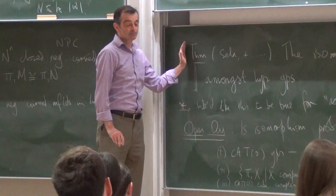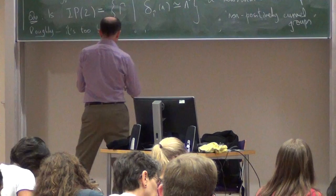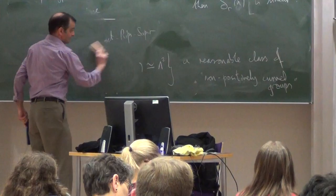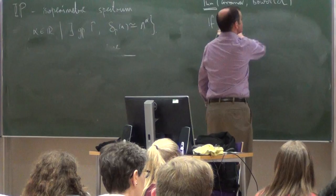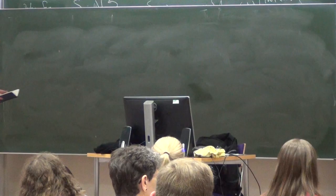Wonderful. Sela's theorem combined with Farrell-Jones says you can recognize which manifold is which amongst negatively curved manifolds in high dimensions. But Farrell-Jones later extended this to non-positive curvature. That theorem remains true in non-positive curvature. So if you could solve the isomorphism problem for fundamental groups of non-positive curvature manifolds, you'd be able to solve the homeomorphism problem and know which high dimensional manifolds are non-positively curved. We don't know that.